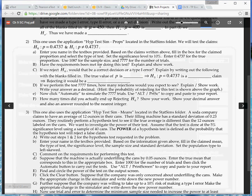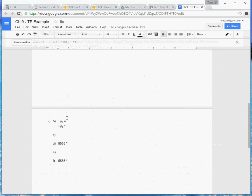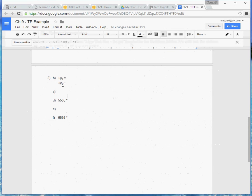So we've got all that stuff entered in, and now they want us to check the requirements for doing the test. So this is a test about a proportion. So the requirements on that type of test is that we need NP0 and NQ0 to both be at least 10.